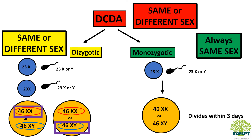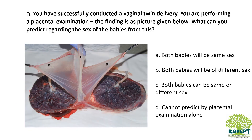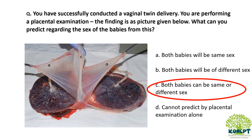Coming back to the question, the answer is option C — both babies can be of same or different sex — because in this question the zygosity is not mentioned. As an umbrella rule, DCDA twins can be of same or different sex.